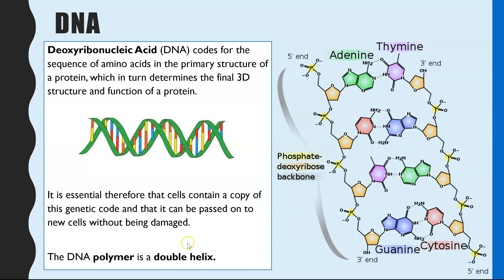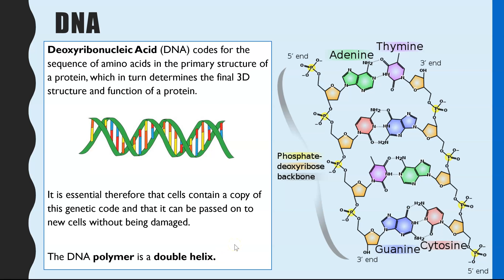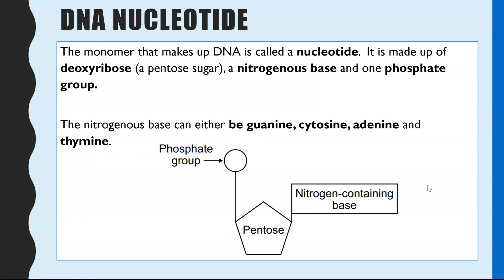So first of all, a DNA nucleotide. We'll be looking at the monomer which makes up a DNA polymer. So this DNA nucleotide, you'll be familiar with this from GCSE, it contains a phosphate group, a pentose sugar, and a nitrogen-containing base. Now one of the key differences from GCSE is you would have to say the name of that pentose sugar, so for DNA you would have to state it's deoxyribose.